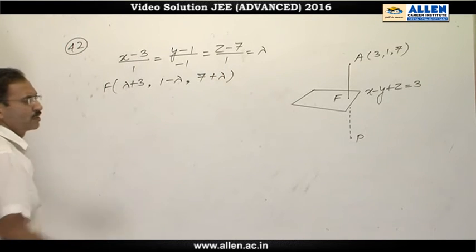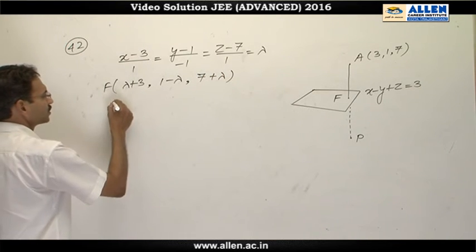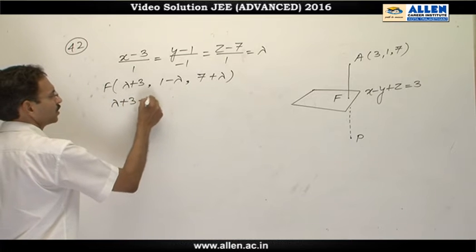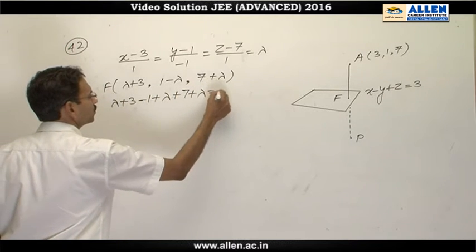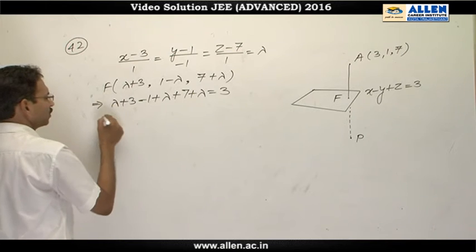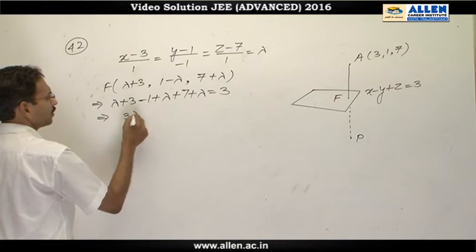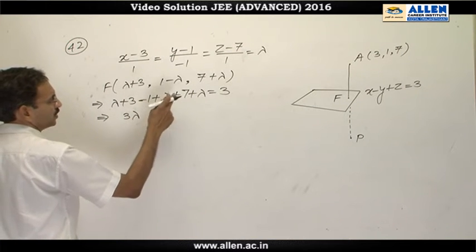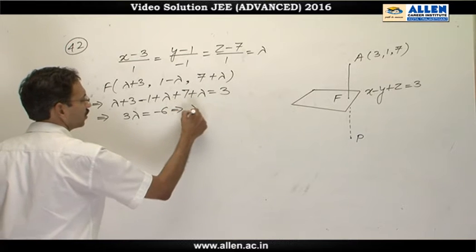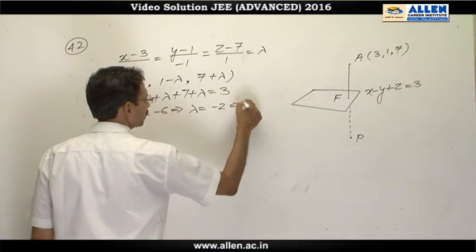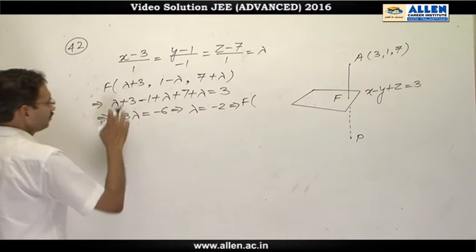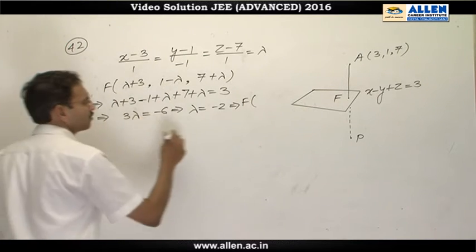We will substitute this point in the plane, which gives us λ+3 - 1+λ + 7+λ = 3, which implies 3λ+9 = 3. So this is -6, or λ is -2, giving you the point F as (1,3,5).